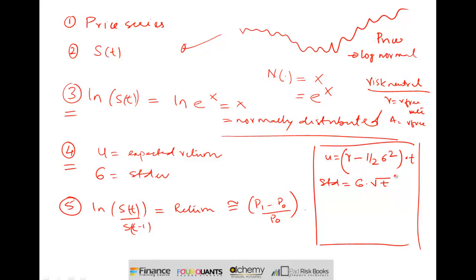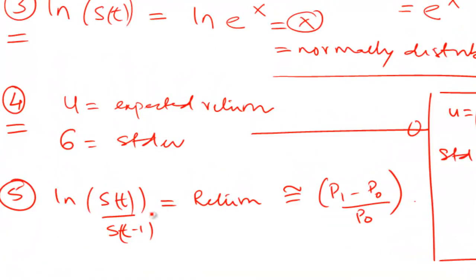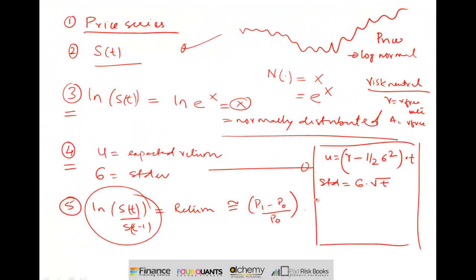So what we've now done is set the context. We have S(t) representing a price series for a financial security. We're interested in ln(S(t)), which equals X and is normally distributed, whereas S(t) is log-normally distributed. We then defined an expected return and standard deviation for this series. What we're really looking at is the return series that gives us some indication of the relative percentage jump from one period to the next. This is context — we haven't yet gotten into the derivation itself.